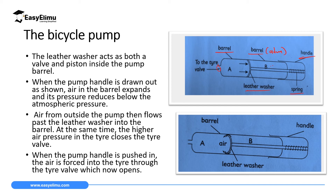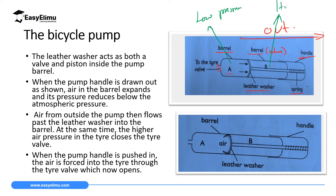When you pull the handle out, the space in Barrel A will expand. The air inside Barrel A will expand, meaning it will occupy a large volume. When particles of air are distributed over a very wide volume, they are far from each other, so we will have low pressure at Barrel A. Since Barrel B is at atmospheric pressure, Barrel B will have high pressure relative to Barrel A. Due to this pressure difference between B and A, air pressure will move from Barrel B — where it is high — to Barrel A.